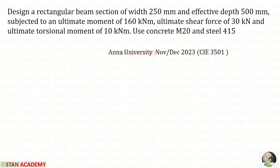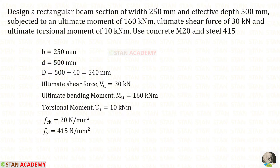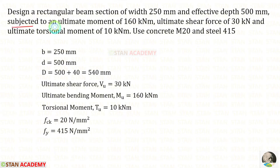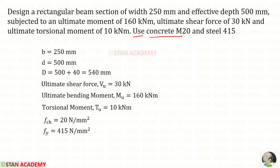Hello everyone, today we are going to design a beam for torsion. Let us read the question and write the given data. Design a rectangular beam section of width 250 millimeter and effective depth 500 millimeter. The width B is 250 and the effective depth D is 500. Let us assume the effective cover D-dash as 40 millimeter, so the overall depth D will be 500 plus 40, giving 540 millimeter. The beam is subjected to an ultimate moment of 160 kilo Newton meter, ultimate shear force of 30 kilo Newton, and ultimate torsional moment of 10 kilo Newton meter. Use concrete M20 and steel Fe 415; FCK is 20 and Fe is 415.